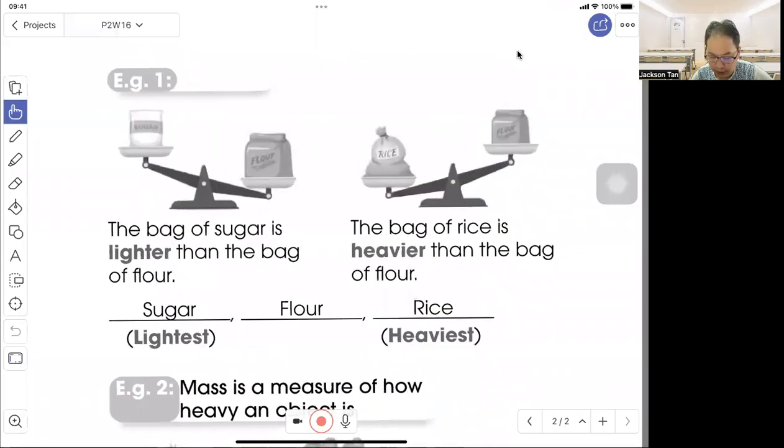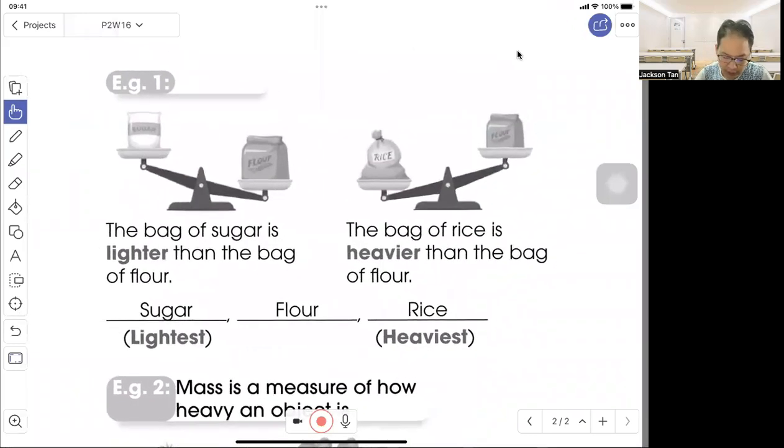Example 1. The bag of sugar is lighter than the bag of flour. So the lighter goes up, the heavier goes down. The bag of rice is heavier than the bag of flour. So the rice goes down, flour goes up.